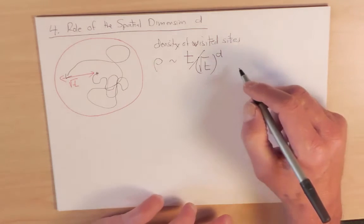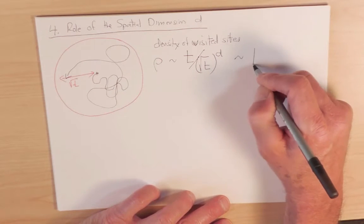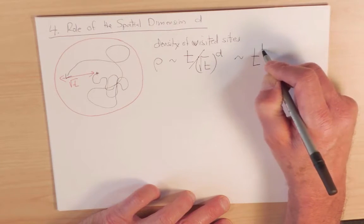The crucial point here is that this quantity has an interesting dependence on time. It's t to the power 1 minus d over 2.